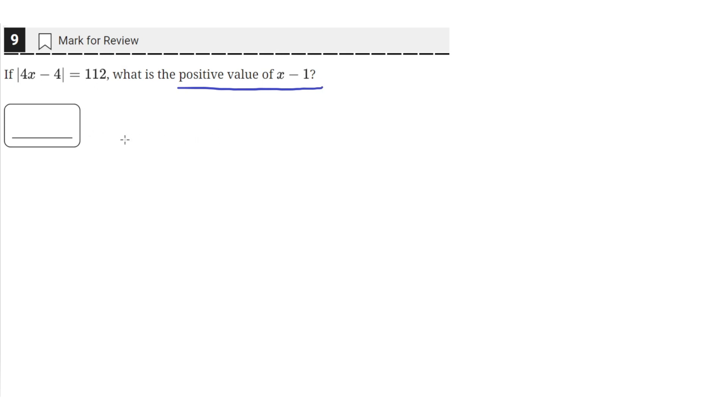Okay, so what we need to do is manipulate this equation, the absolute value of 4x minus 4 equals 112, to look like x minus 1. We can do this by factoring out a 4 from this absolute value term.